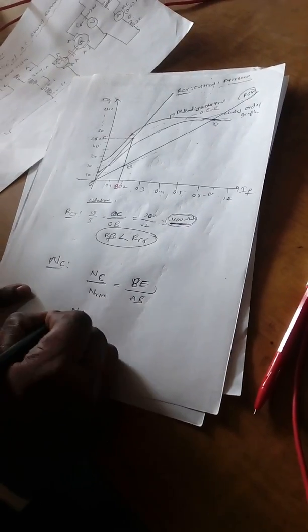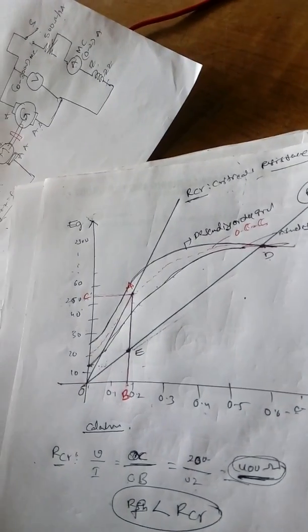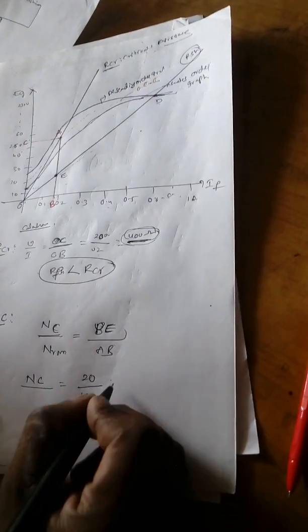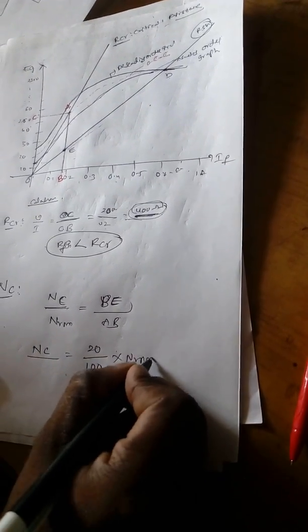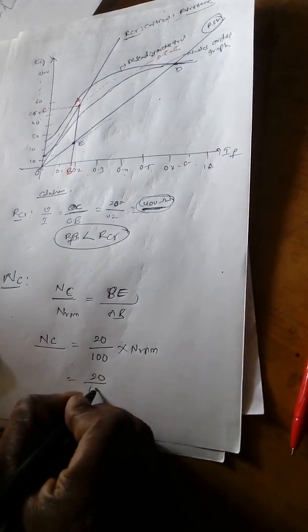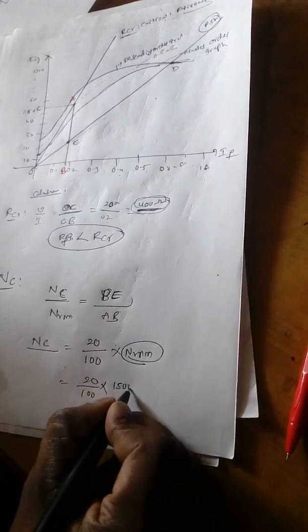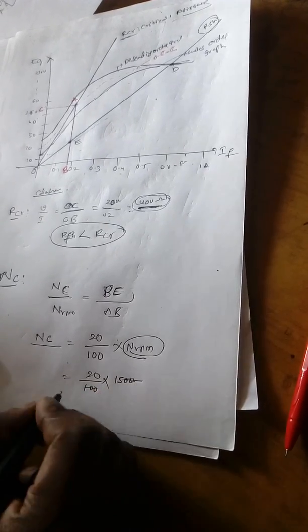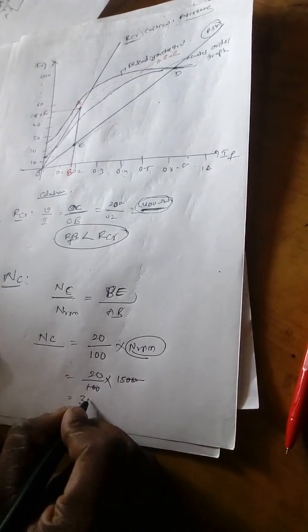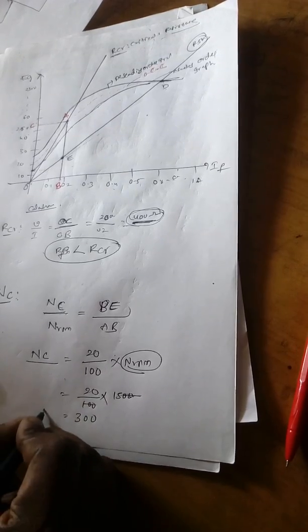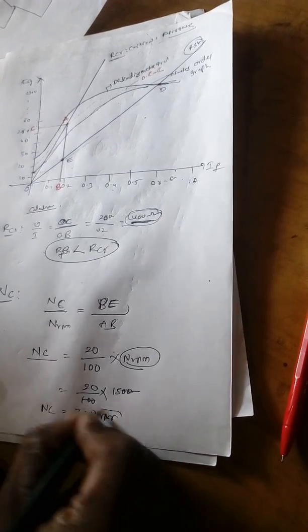Small voltage divided by total voltage. So NC, the critical speed, is BE — if it is 20 volts — divided by the total, say 100 volts, multiplied by N RPM. If the motor speed is 1500 RPM, then 20 divided by 100 into 1500: 100 cancels, giving 15 times 20, which is 300. The critical speed is 300 RPM.